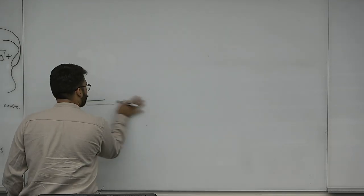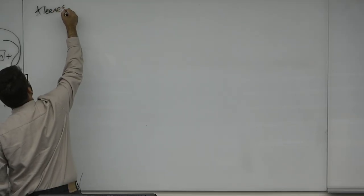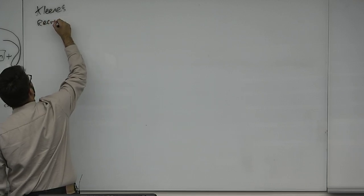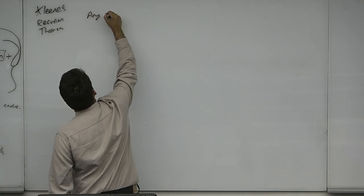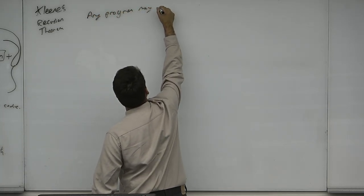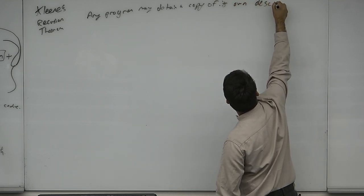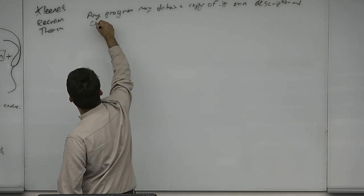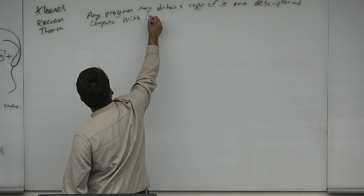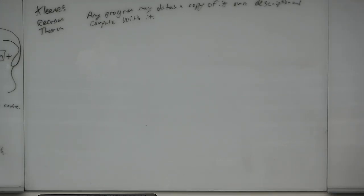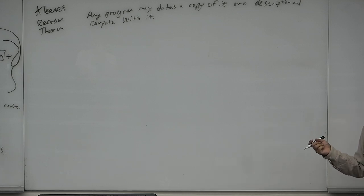Let's do the recursion theorem — Kleene's recursion theorem. There are about six versions of this theorem. Any program may obtain a copy of its own description and compute with it. How applicable is this in a real modern computer? This doesn't really change too much because you can always just read your code on disk. But this basically says you don't have to. A virus may not be allowed to read its own code from an API call — it doesn't matter, it can still compute its own code.